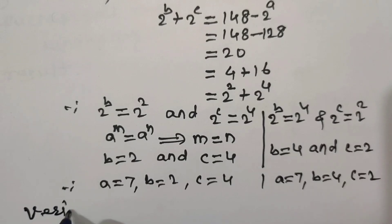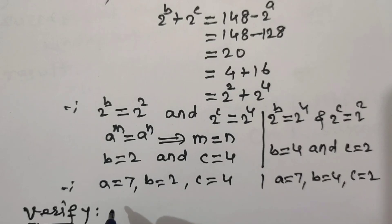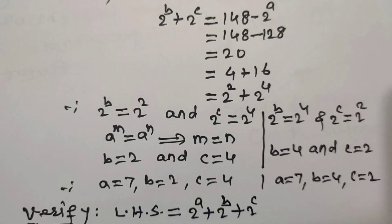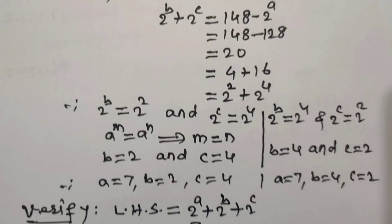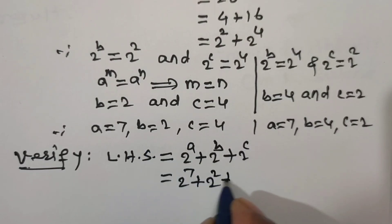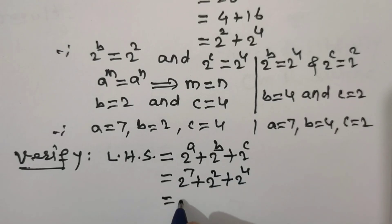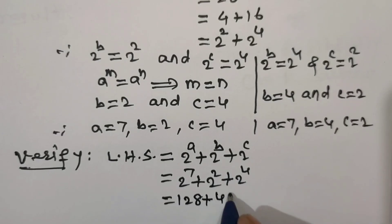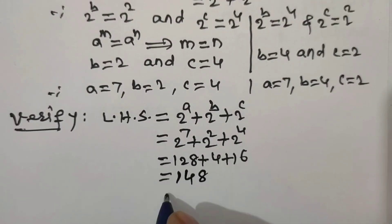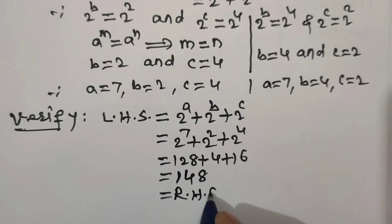Let us verify: put a = 7, b = 2 and c = 4 on the left hand side of the given equation. LHS = 2^7 + 2^2 + 2^4 = 128 + 4 + 16 = 148, which equals the right hand side. This confirms the observation method.